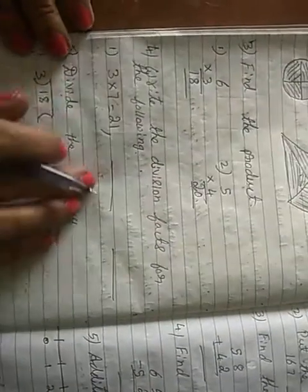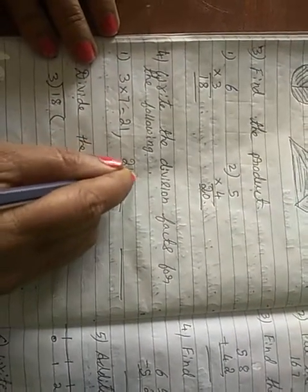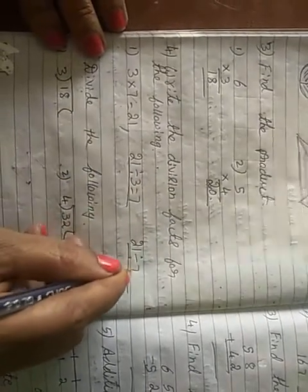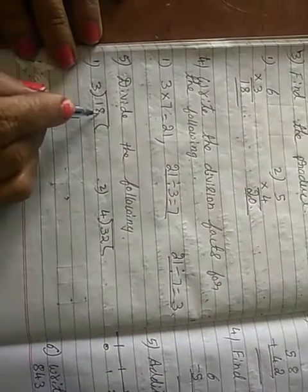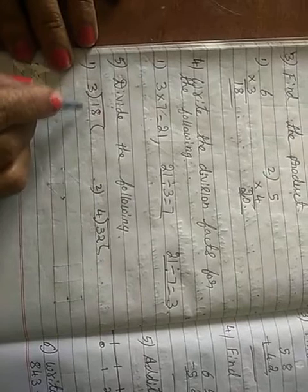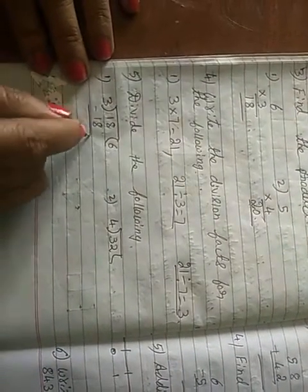Write the division facts for the following. Division facts are 21 divided by 3 is equal to 7, 21 divided by 7 is equal to 3. Divide the following. 3 1's are 3, 3 2's are 6, 3 3's are 9, 3 4's are 12, 3 5's are 15, 3 6's are 18. So minus that is 0.